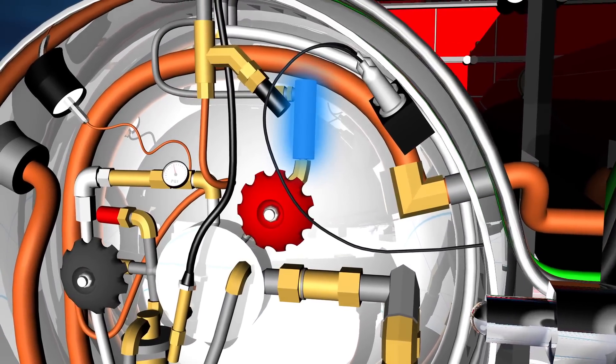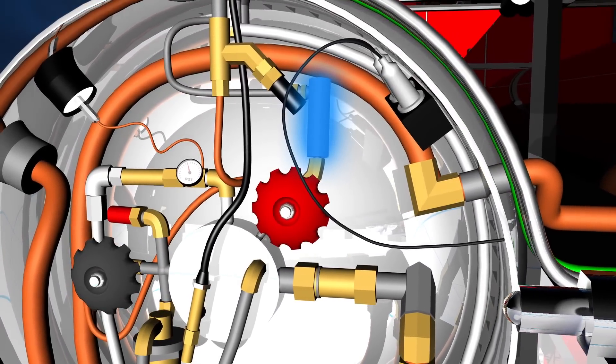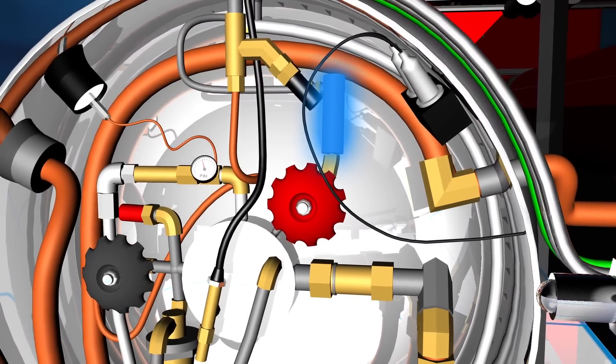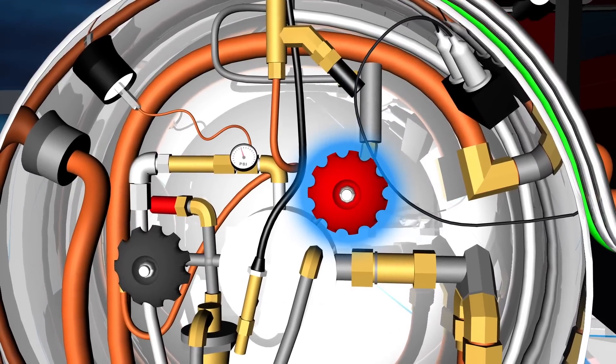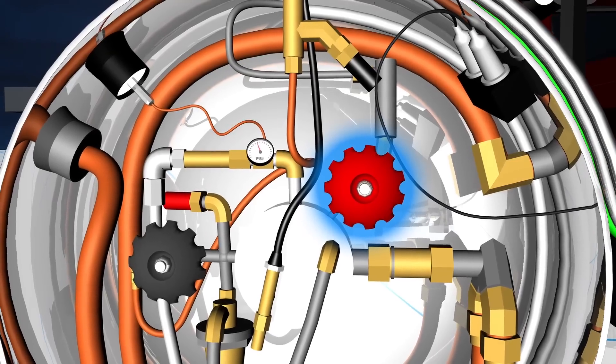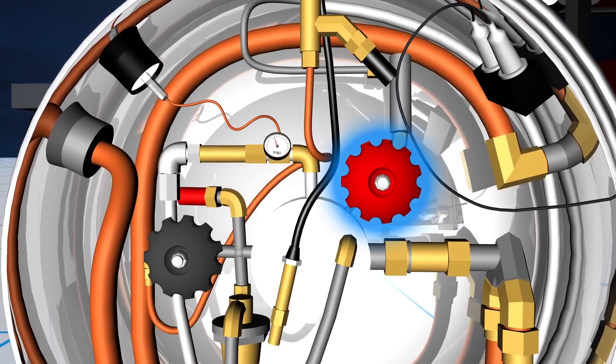At the outlet of the tank, the excess flow valve protects against catastrophic failure downstream. The red-handled fuel shutoff valve on each tank allows the tank to be isolated for service but is left open during operation.